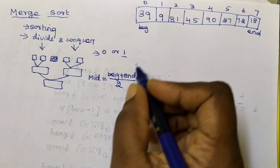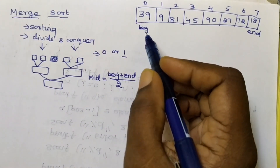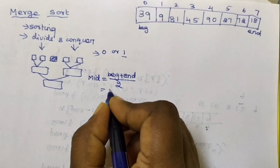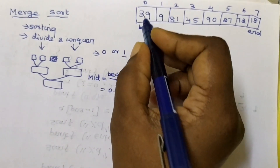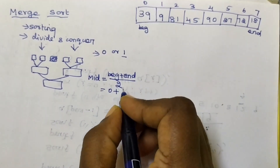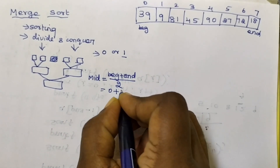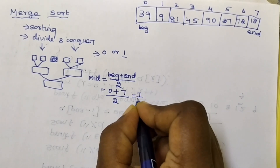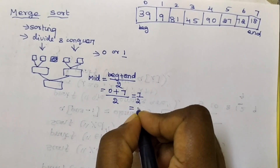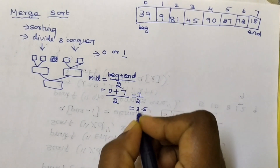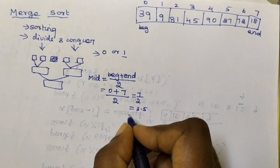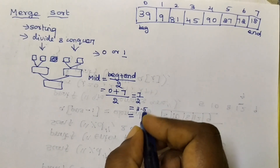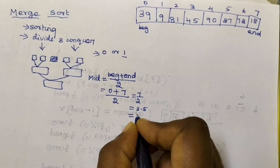To compute the mid value, the beginning index is 0. So 0 plus end (which is 7) divided by 2 equals 3.5. In this case, we take the floor value, so the mid element is 3.